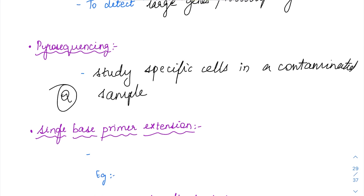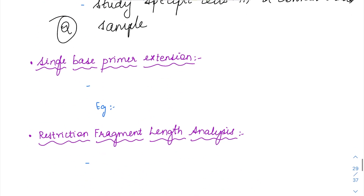Suppose that you are obtaining a tumor cell biopsy. In the tumor cells you are also going to have the surrounding stromal cells. You do not want to study the stromal cells — you want to study the tumor cells. So for extracting these tumor cells from the stromal contamination and studying them, you can use pyrosequencing.